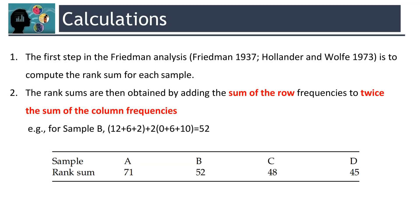Then the first step in the Friedman analysis is to compute the rank sum for each sample. The rank sums are then obtained by adding the sum of the row frequencies to twice the sum of the column frequencies. Here you can see the rank sum of sample B is 52. Likewise, you can calculate the rank sum for A, C and D. They are 71, 48 and 45.